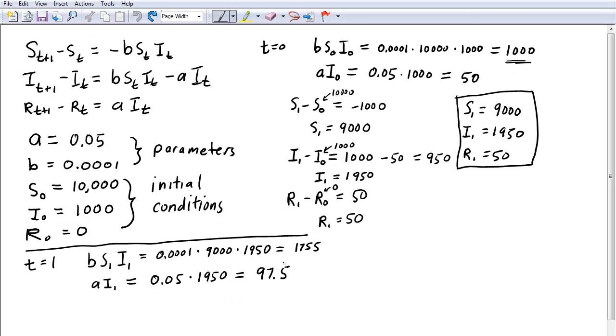If you plug these values into the equations here, you can calculate that the number of susceptibles in day two, since it decreases by 1,755, is down to 7,245.